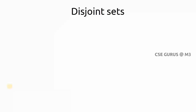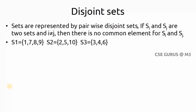Now let's go to the first topic: disjoint sets. We know the basic definition of a set — it is a collection of some elements. In a disjoint set, if you take two sets S1 and S2, there should not be any common element; that is, S1 intersection S2 should be an empty set. For example, if you take S1, S2, and S3 with no common elements, you can say these three are disjoint sets. By taking at least two sets — where i is not equal to j — and finding no common element, you can call them disjoint sets.